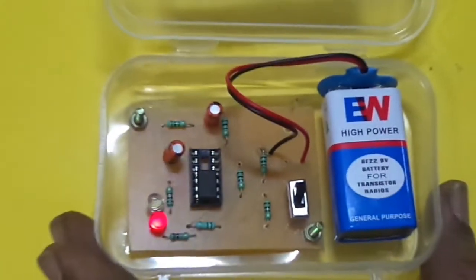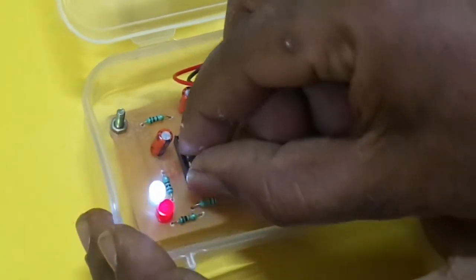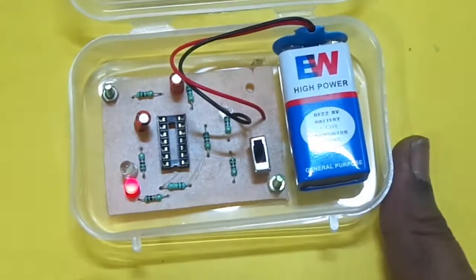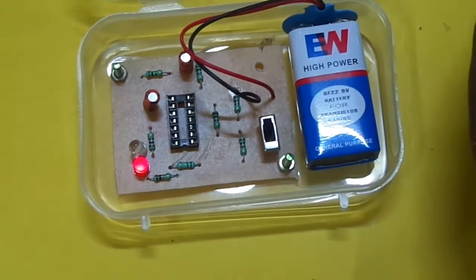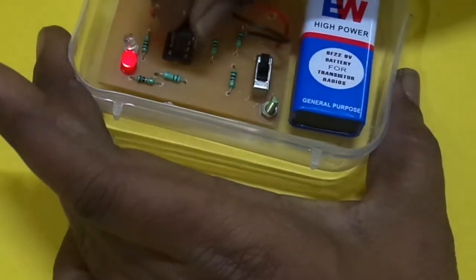If you want to check the IC741, just remove the existing IC, take one IC which is going to be tested, and insert it carefully into the IC pin socket.